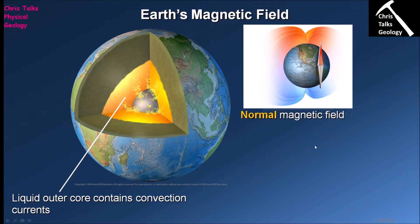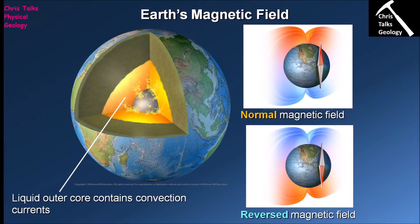We are used to what we refer to as the normal magnetic field, where the polarity ends up with north being north and south being south. However, at some points the magnetic field has actually reversed — these reversed magnetic fields mean the polarity has changed, so now north is south and south is north. We can actually use these flips to help us look at the creation of new crust at divergent plate boundaries.